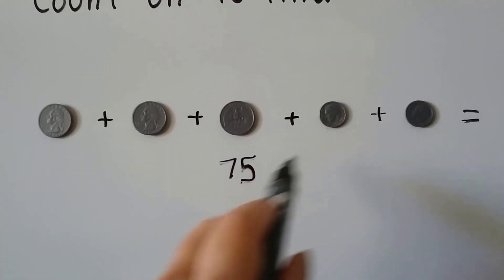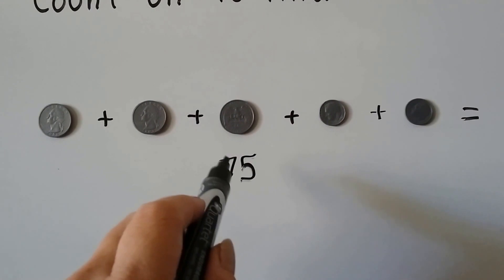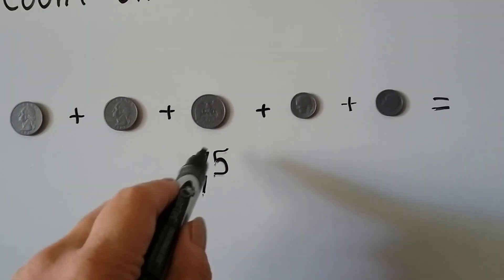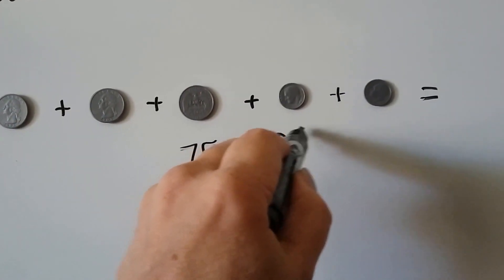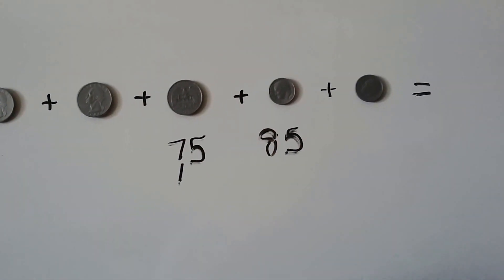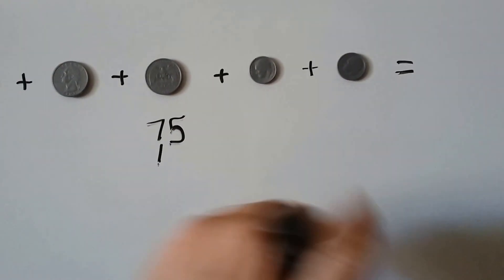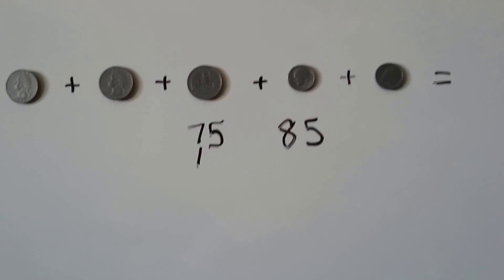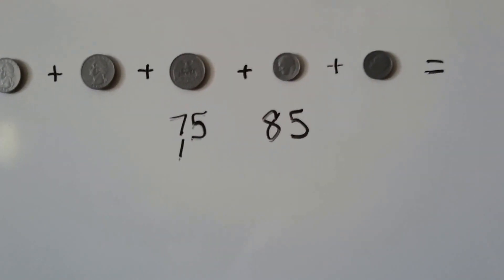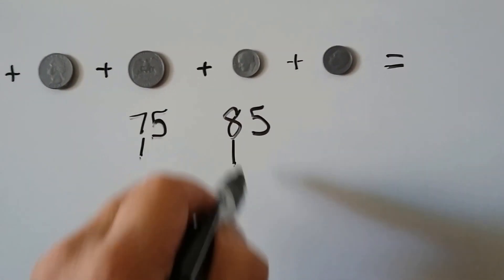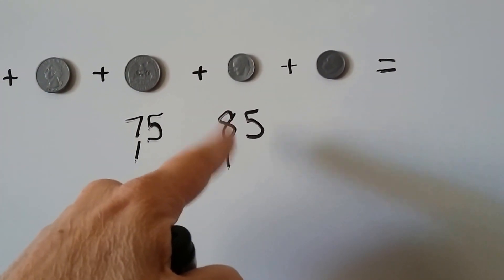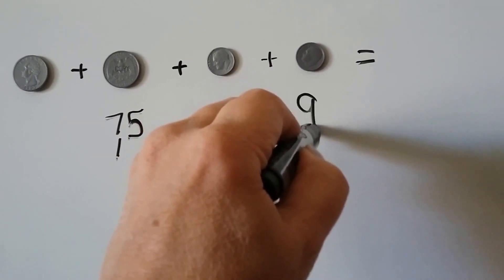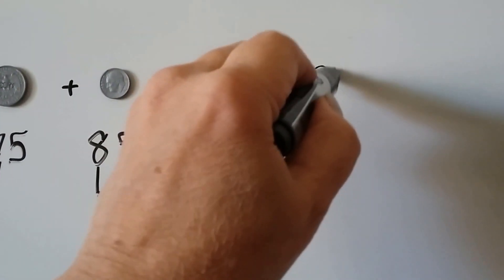Adding one dime adds 1 to the tens place, giving us 85. Adding the next dime adds another 1 to the tens place — 8 and 1 is 9 — so we have 95 cents. Three quarters and two dimes makes 95 cents.